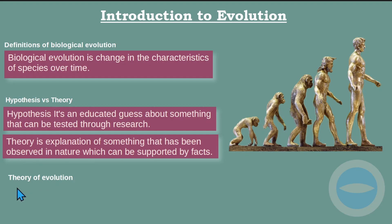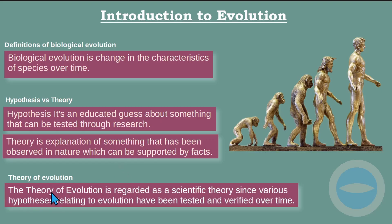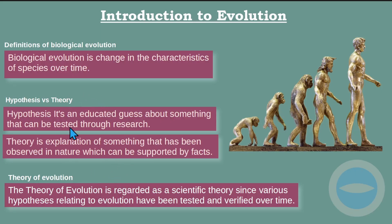The theory of evolution is regarded as a scientific theory since various hypotheses relating to evolution have been tested and verified over time. That is why we say it's a theory of evolution — there was testing, there were experiments, and the facts were established. We don't call it a hypothesis of evolution; we call it the theory of evolution because tests took place and verification happened over time. Please write these notes down as explained.